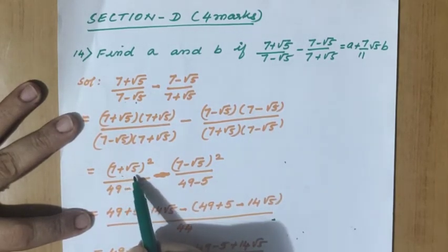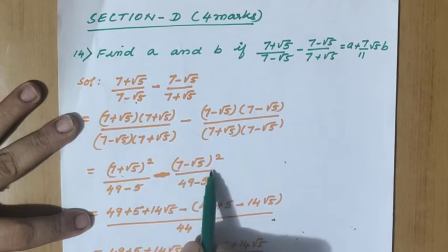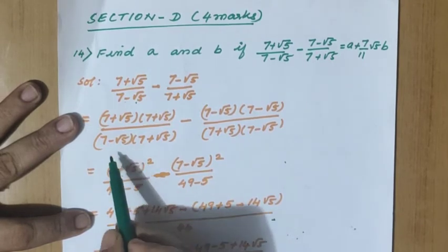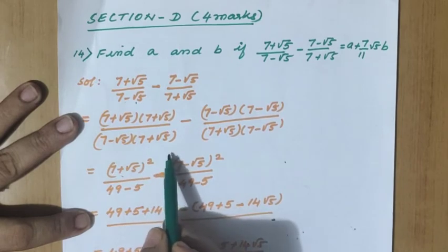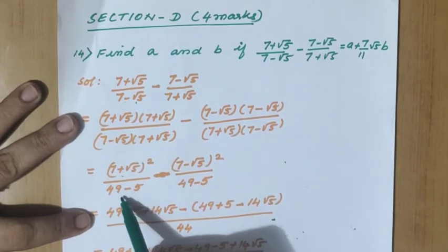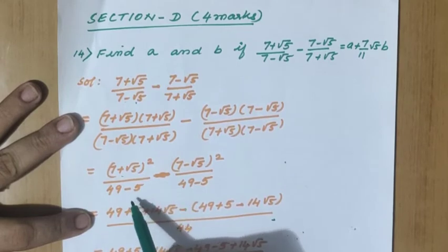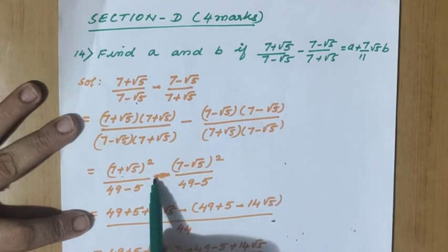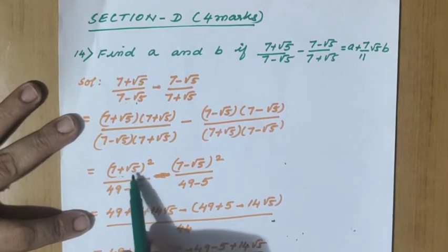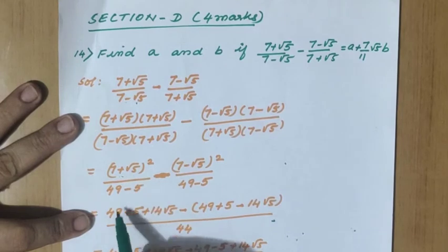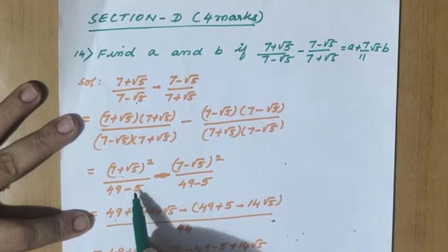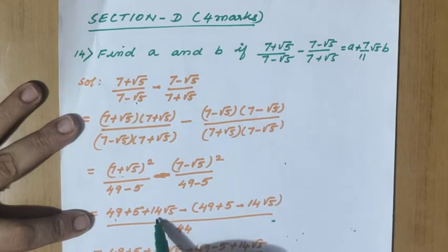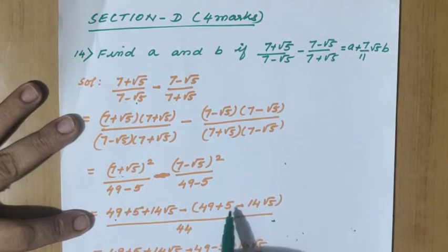For the first fraction, multiply numerator and denominator by 7 minus root 5; for the second fraction, multiply by 7 plus root 5. So the numerator becomes 7 plus root 5 whole square on one side and 7 minus root 5 whole square on the other. For the denominator, using a minus b into a plus b: 7 square minus root 5 square equals 49 minus 5 equals 44. Since the denominator is the same, we simplify the numerator. A plus B whole square has a square 49, b square 5, and the middle term 2ab equals 14 root 5.